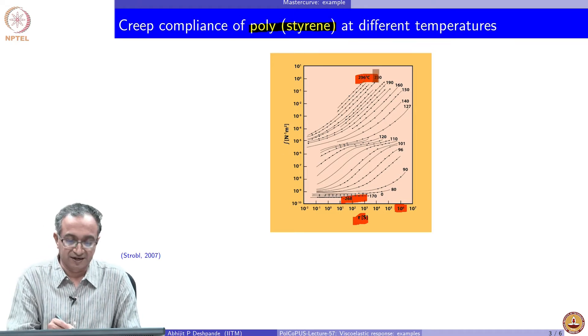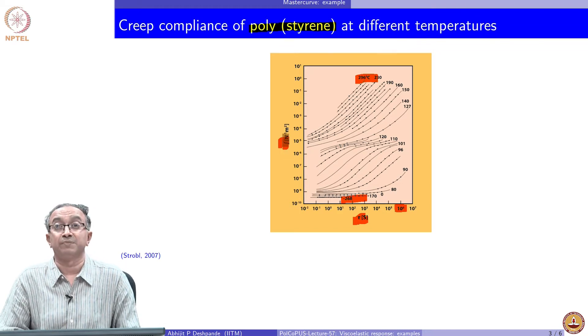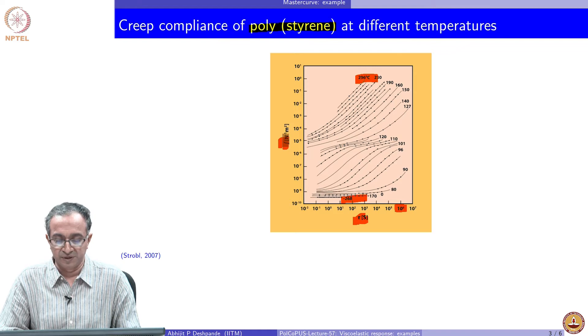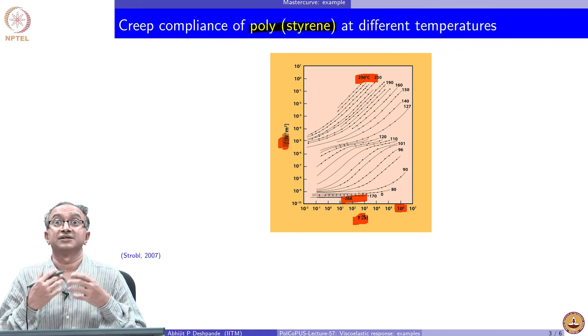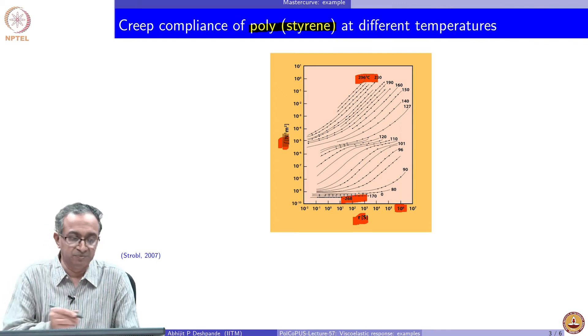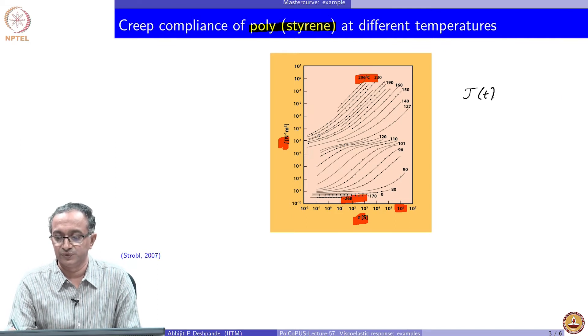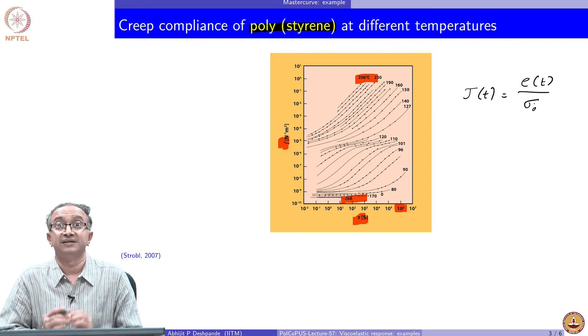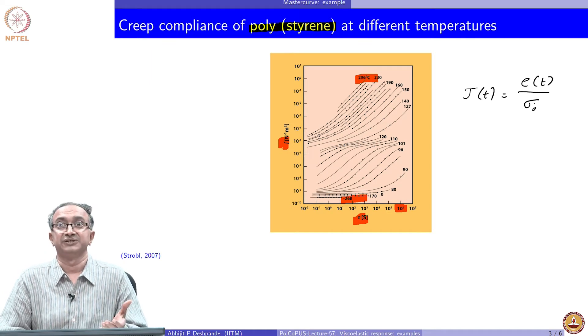And what we can see is the compliance, right? Compliance varies from very low which means the material is stiff and does not comply as much. The strain in the material is very less. Remember that compliance is related to strain in the material divided by the constant load that is being applied in a creep experiment. So strain is very high at high temperature.